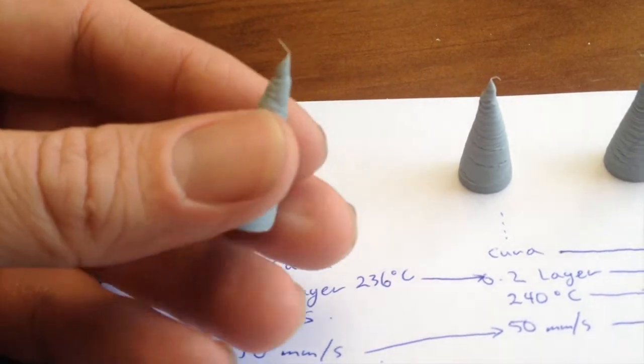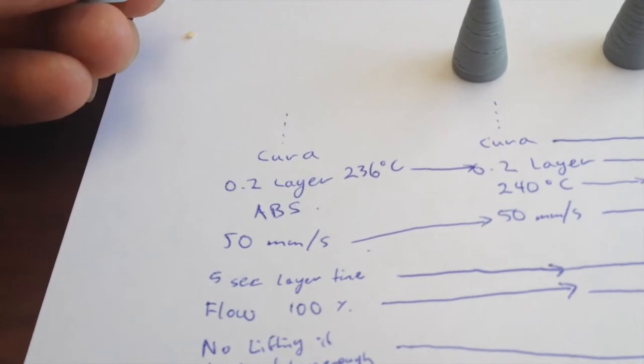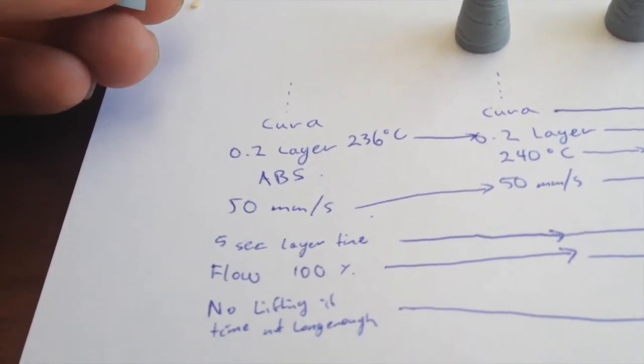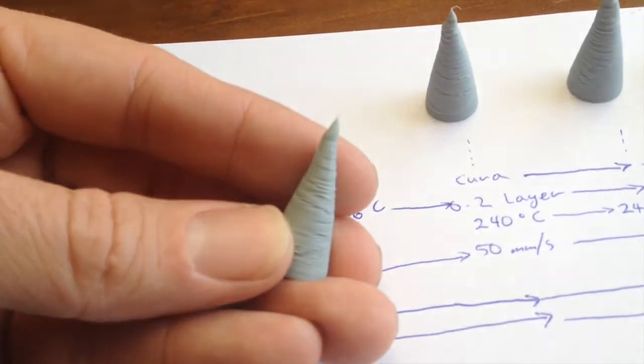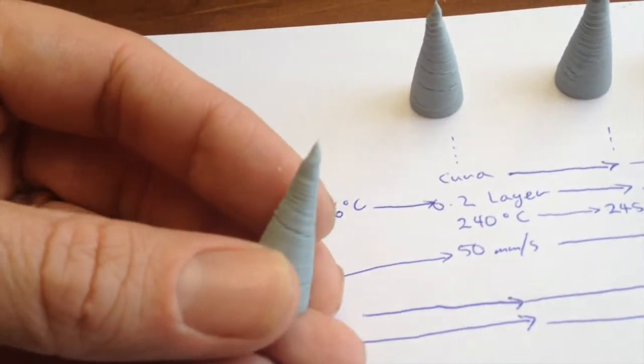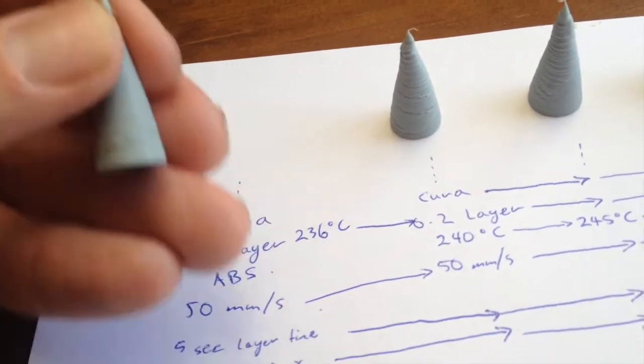So this is with the Wanhao I3. This is my standard print settings of 0.2 layer height, 236 degrees on ABS, and you can see the other settings there. It didn't turn out too bad, as you can see. There's a little bit of distortion at the top there. It's still got a reasonable point on it.